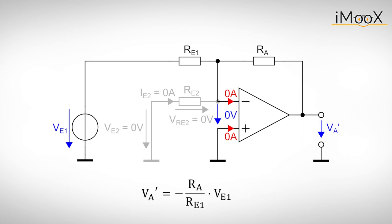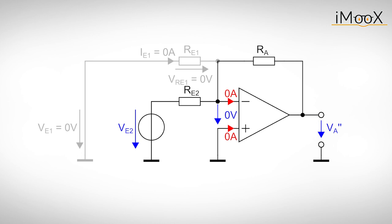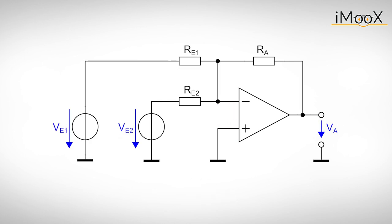We end up with an inverting amplifier and can use the result from before. The process is exactly the same for the second input source. Superpositioning the two individual output voltages gives the output voltage of the summing amplifier.